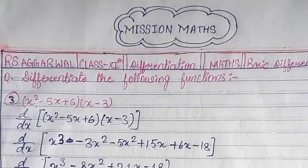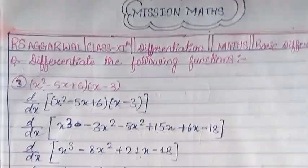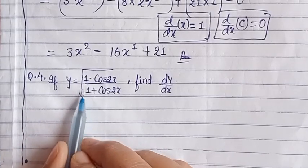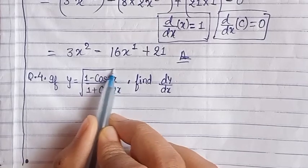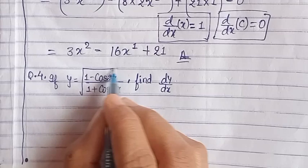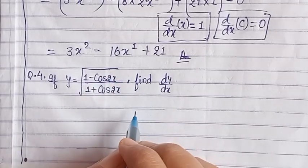Question number 4. So here we have solved question number 3. Question number 4: if y equals root under (1 minus cos 2x) upon (1 plus cos 2x), this is given to us.